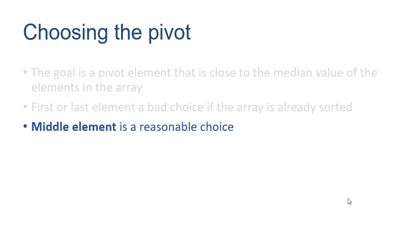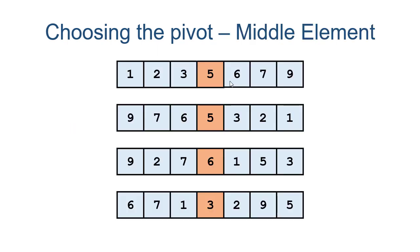The middle element is typically a reasonable choice. If the array is already sorted, choosing the middle element is guaranteed to be ideal because half will be smaller and half larger. Even in other arrangements, we get a two-four split, which is good enough to give us an efficient algorithm.